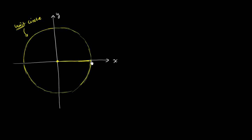So what would this coordinate be right over there, right where it intersects along the x-axis? Well, x would be 1, y would be 0. What would this coordinate be up here? We've gone 1 above the origin, but we haven't moved to the left or the right. So our x value is 0, our y value is 1.